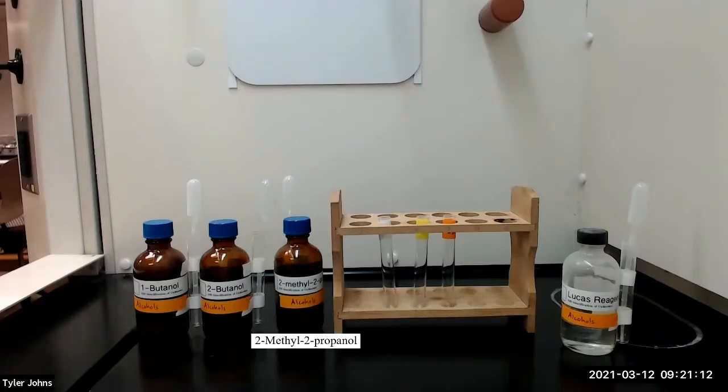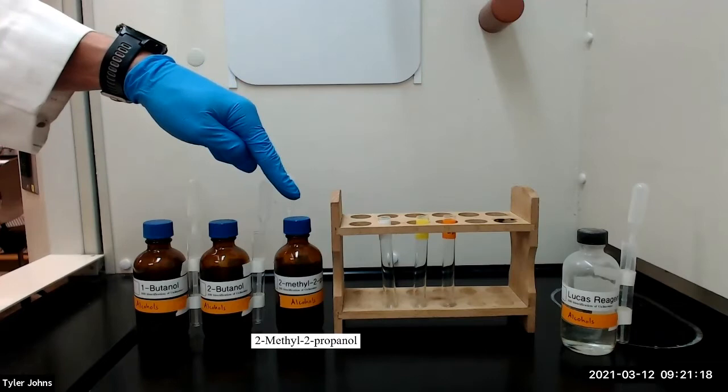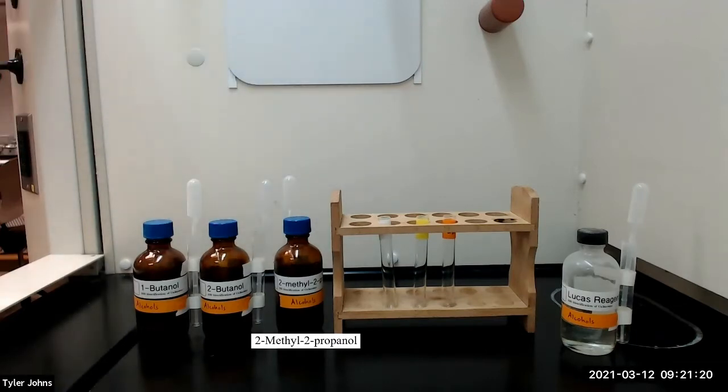We will now perform the Lucas test for alcohols using the test compounds 1-butanol, 2-butanol, and 2-methyl-2-propanol. This test depends on the appearance of an alkyl chloride as an insoluble second layer when an alcohol is treated with the Lucas reagent, which is a mixture of hydrochloric acid and zinc chloride.